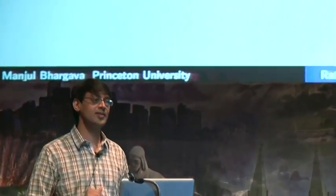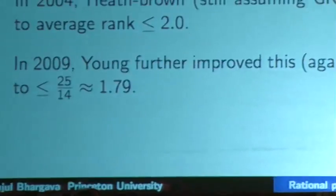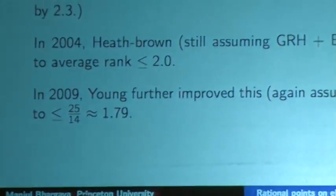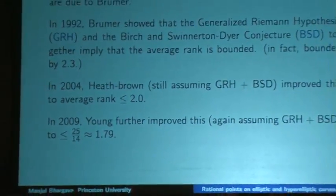This was a significant breakthrough from 2.0, because if the average rank is strictly less than 2, then a positive proportion of curves must have rank 0 or 1. The conjecture is that 100% of curves have rank 0 or 1, but at least this result says a positive proportion should. Of course, all of these results assumed GRH and BSD.